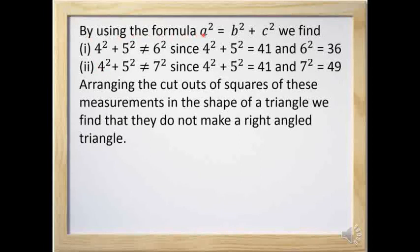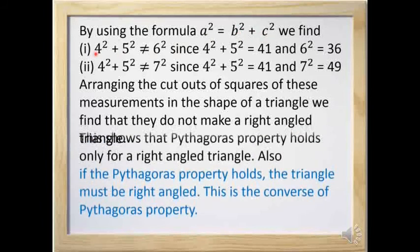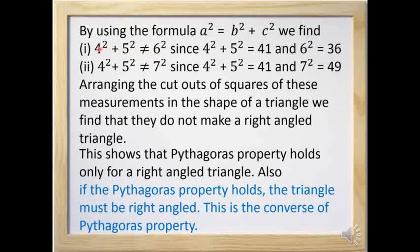By putting the values in the formula a² = b² + c², we find the left-hand side is not equal to the right-hand side. For the first problem: 4² + 5² = 41, but 6² = 36, so 41 ≠ 36. For the second problem: 4² + 5² = 41, and 7² = 49, so again they are not equal. This means if we take cutouts of squares with these measurements and try to form a triangle, they do not make a right angle triangle.